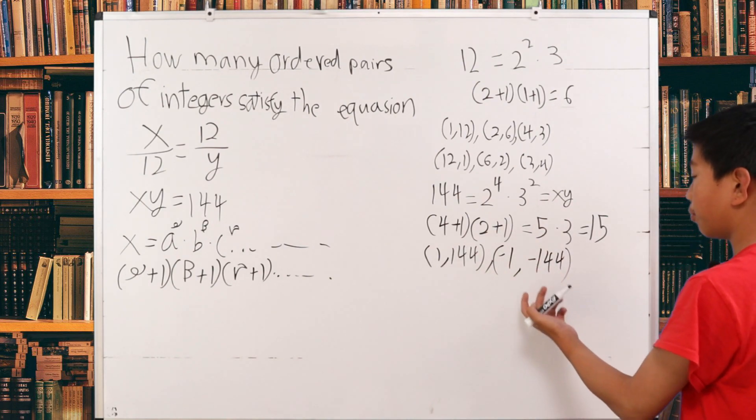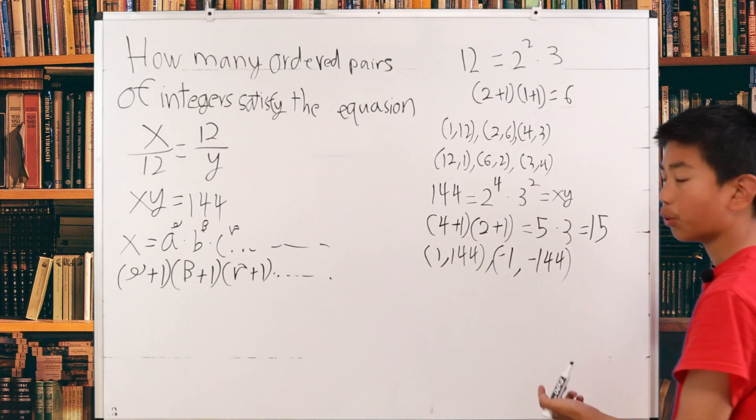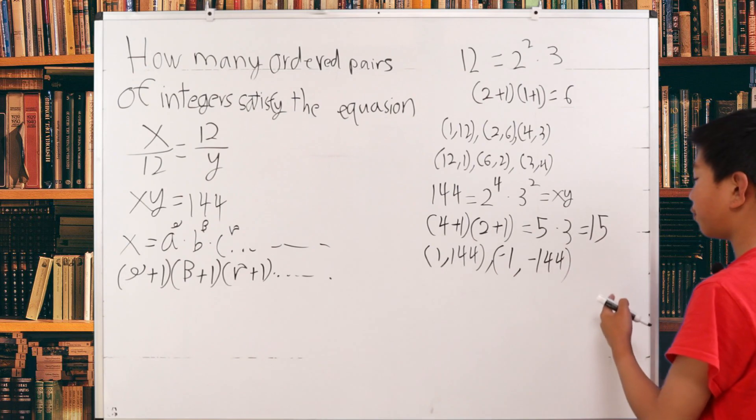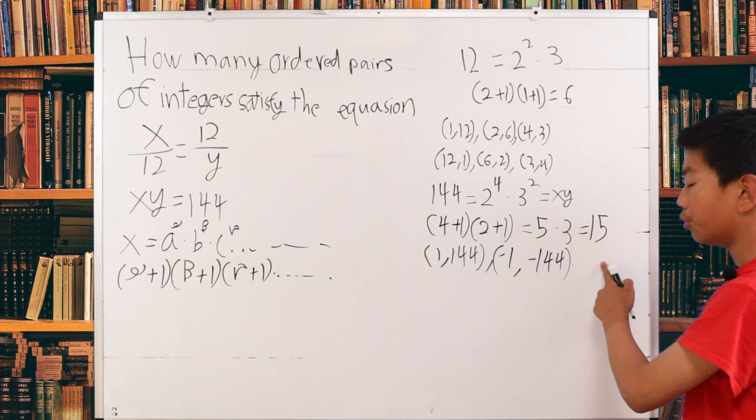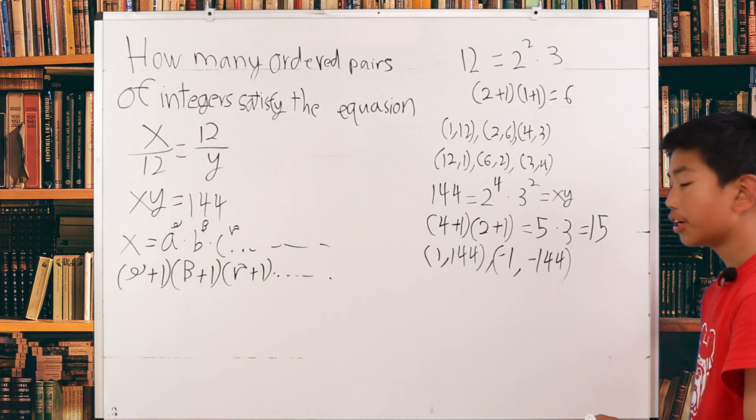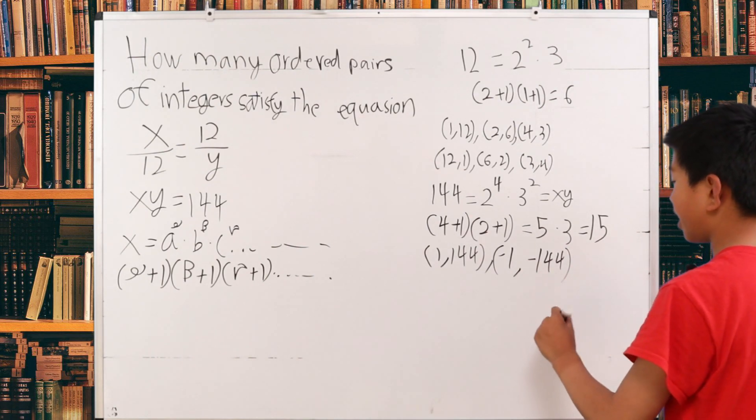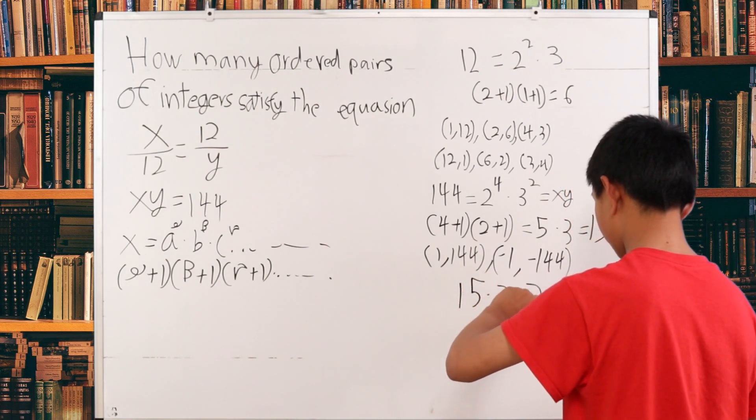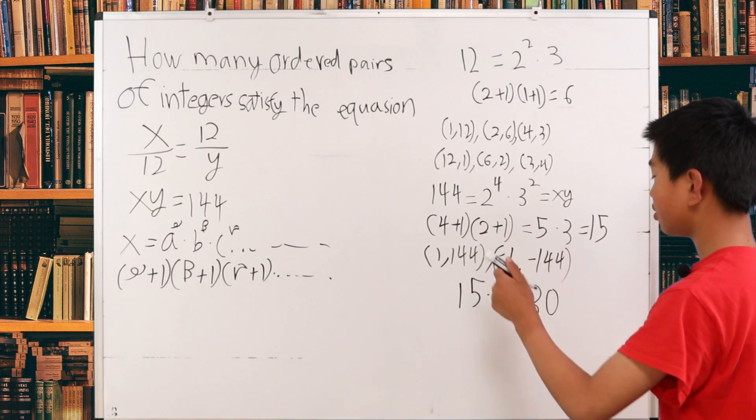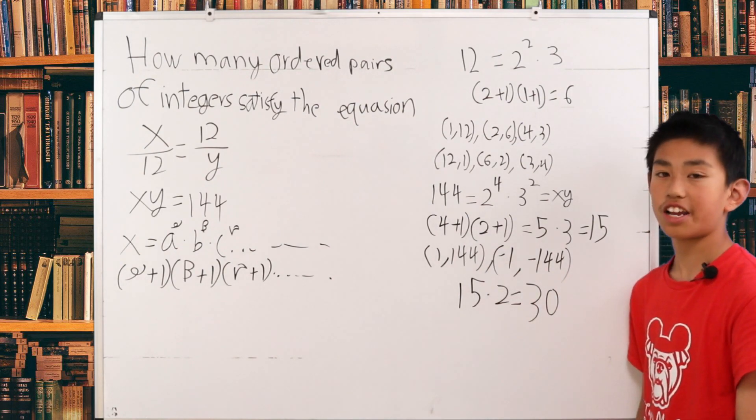So therefore, there are actually not 1. Well, you have to multiply 15 by 2 to get the real answer because there are negatives included. So 15 times 2 is 30. So 30 ordered pairs of integers is our answer.